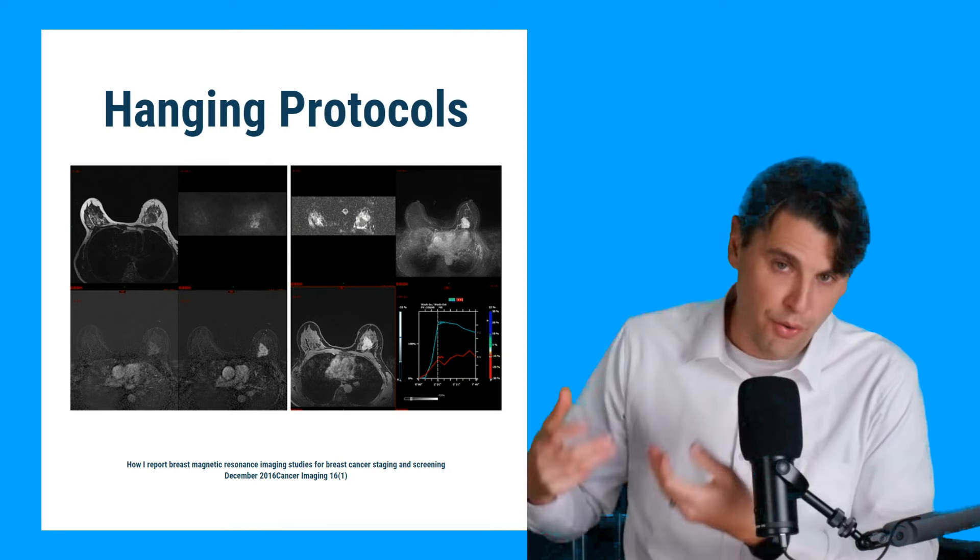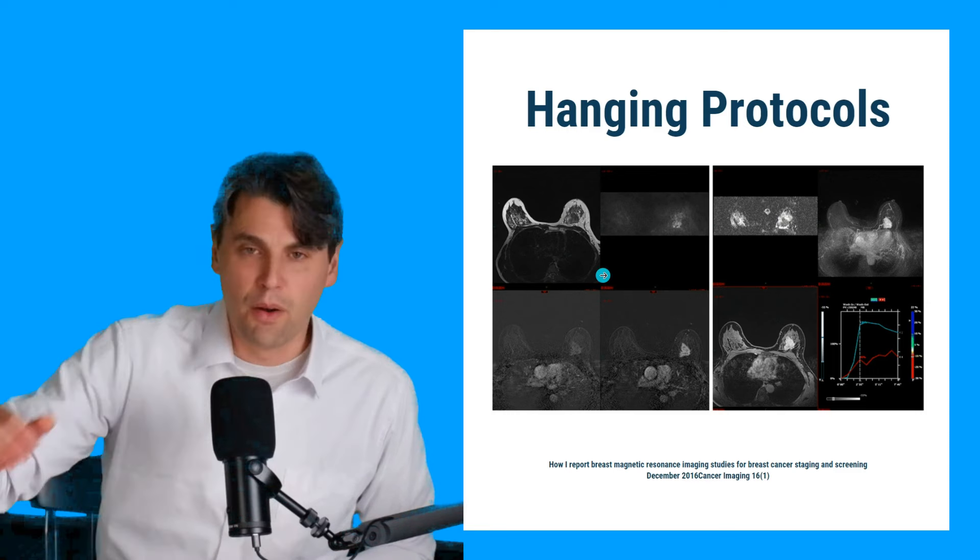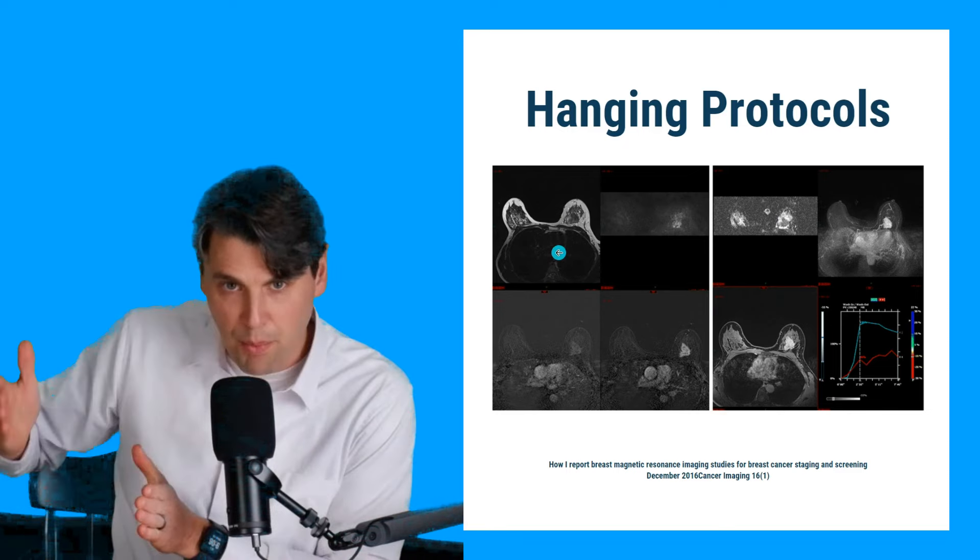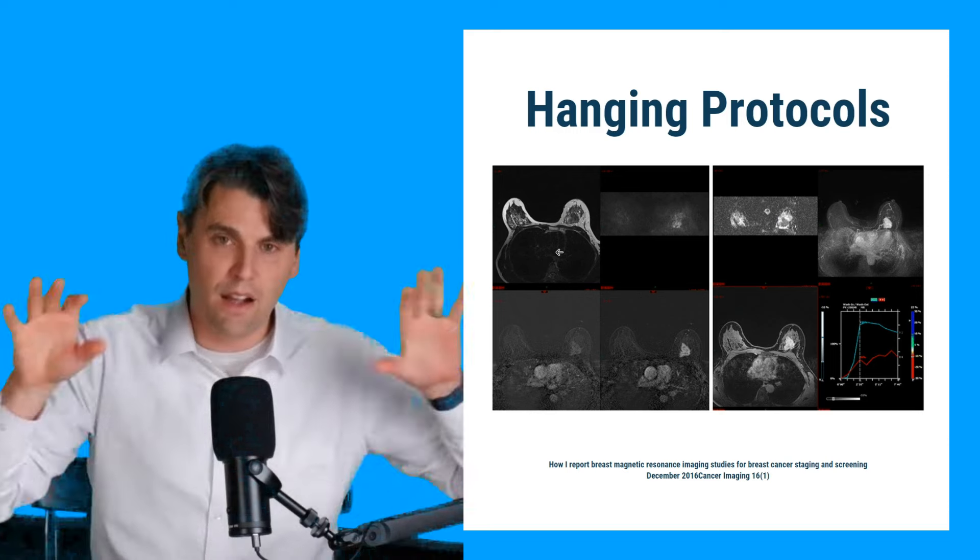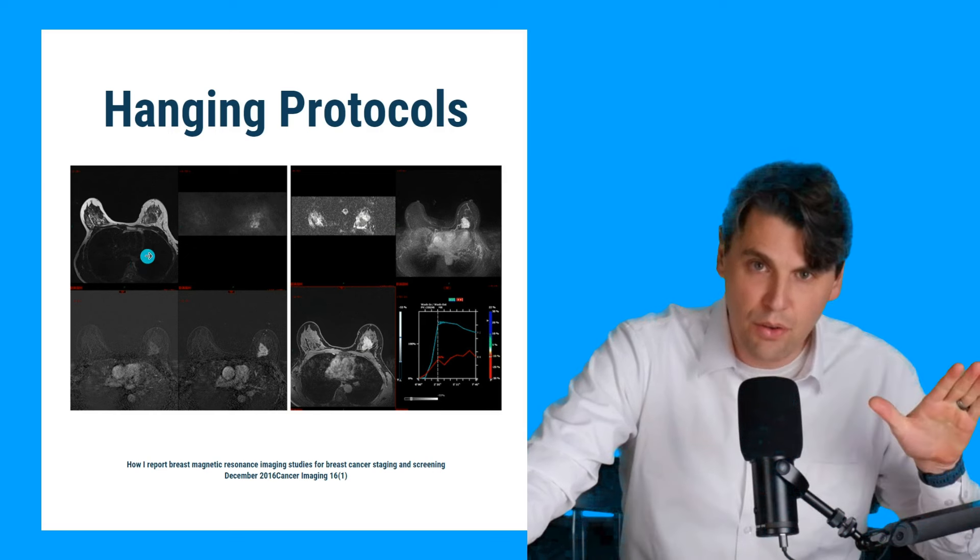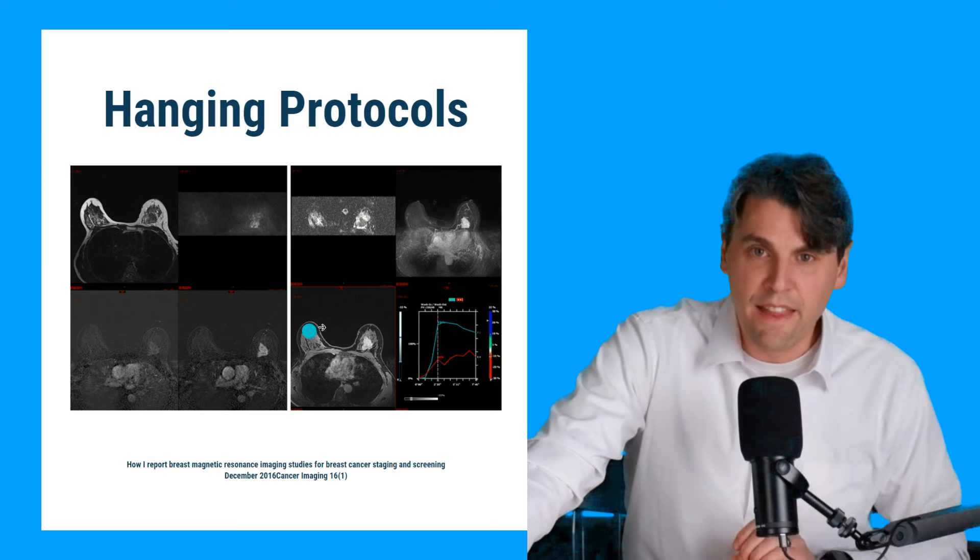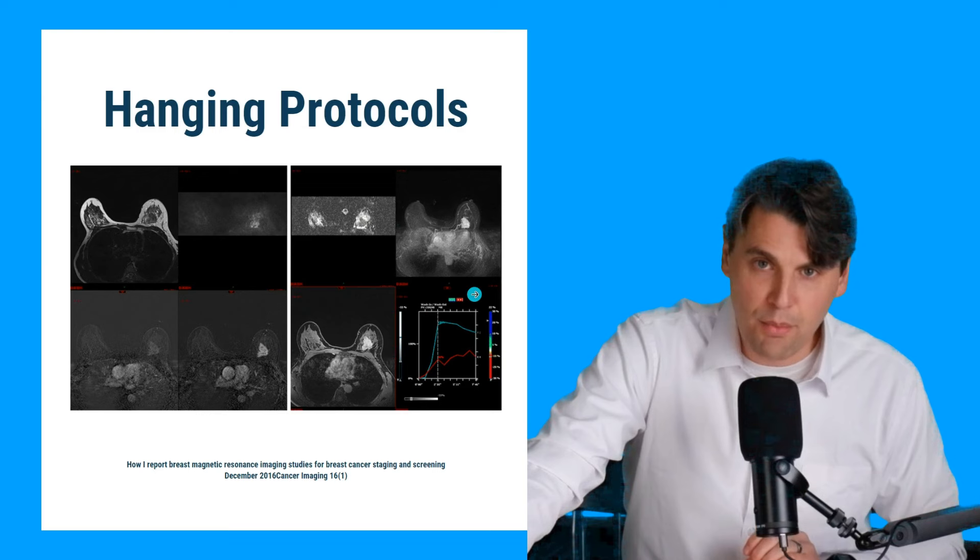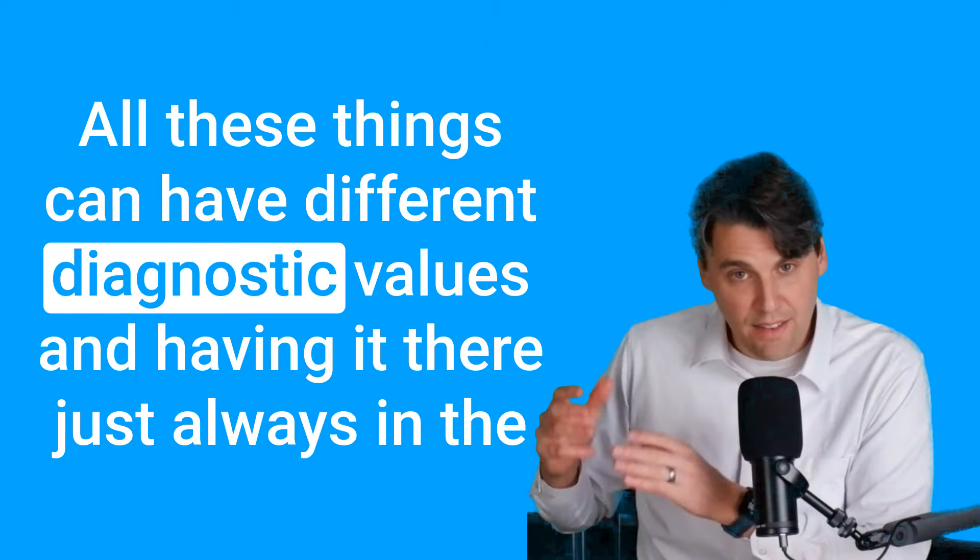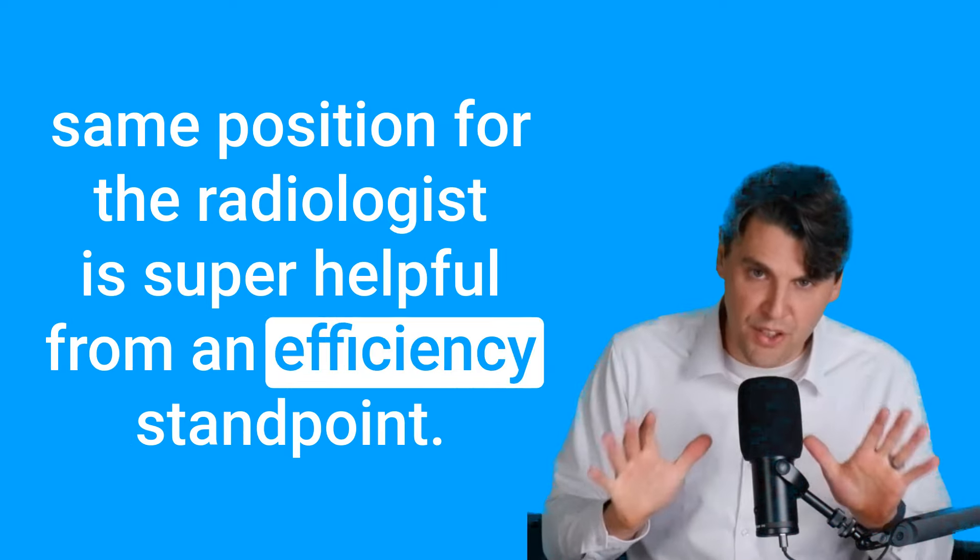This is a hanging protocol for a more complicated read, which is a breast MR acquisition. So in this case, multiple different acquisitions are actually taken and then shown in the same repeated way so that the radiologist gets used to it. They can come in, just sit down and start scrolling through and they know where everything is. There's a T2 image. There's a diffusion image. There's MIPS. There's difference images. And then there's an actual plot of some of the contrast in this MR changing over time. All these things can have different diagnostic values. And having it there, just always in the same position for the radiologist, is super helpful from an efficiency standpoint.